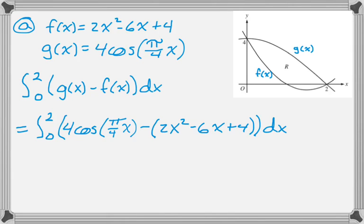Now I have to find an antiderivative. For 4cos(πx/4), if you do a u substitution, u is πx/4, so du is π/4 dx. I need a π/4, so I have to multiply by 4/π. I end up with a coefficient of 16/π, and the antiderivative of cosine is sine.